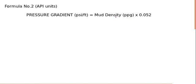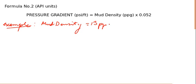To show you how to use this formula, let me give you an example. You have a mud system with mud density of 13 ppg, and you are asked to find the pressure gradient of this mud system.